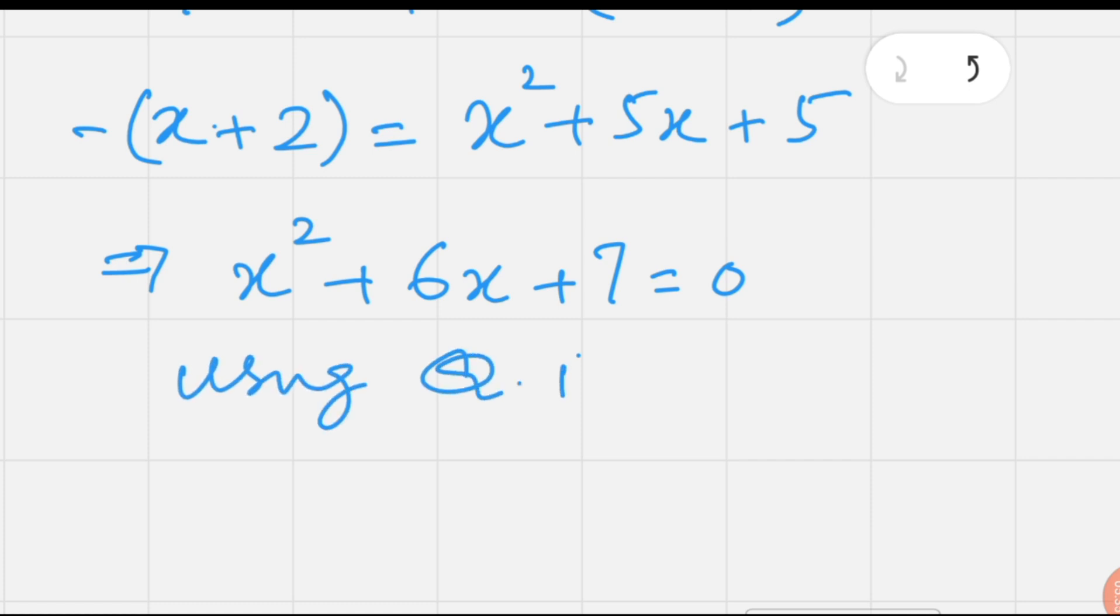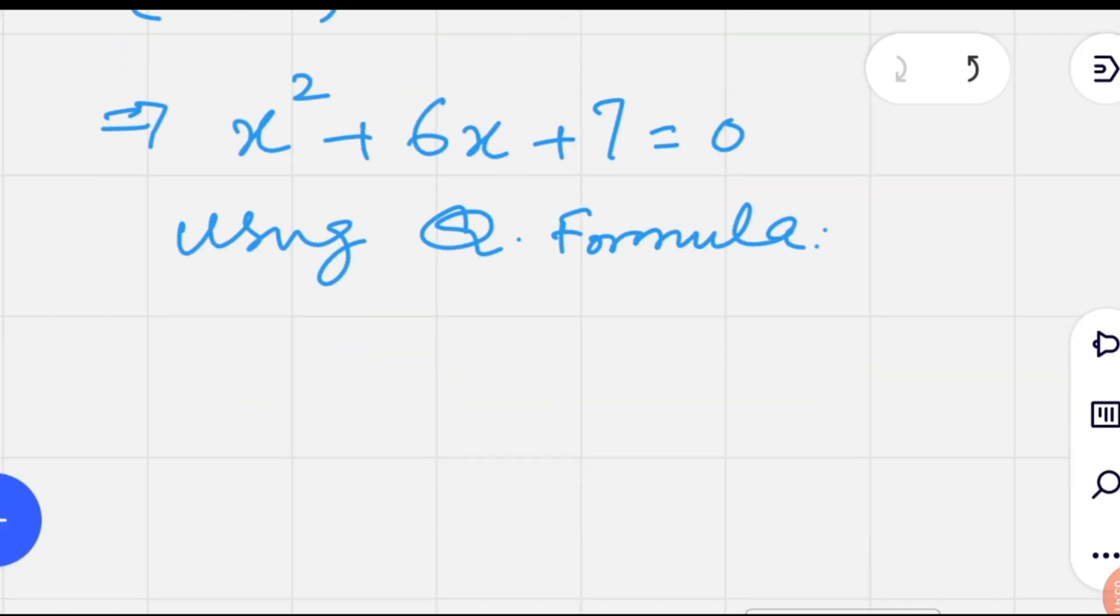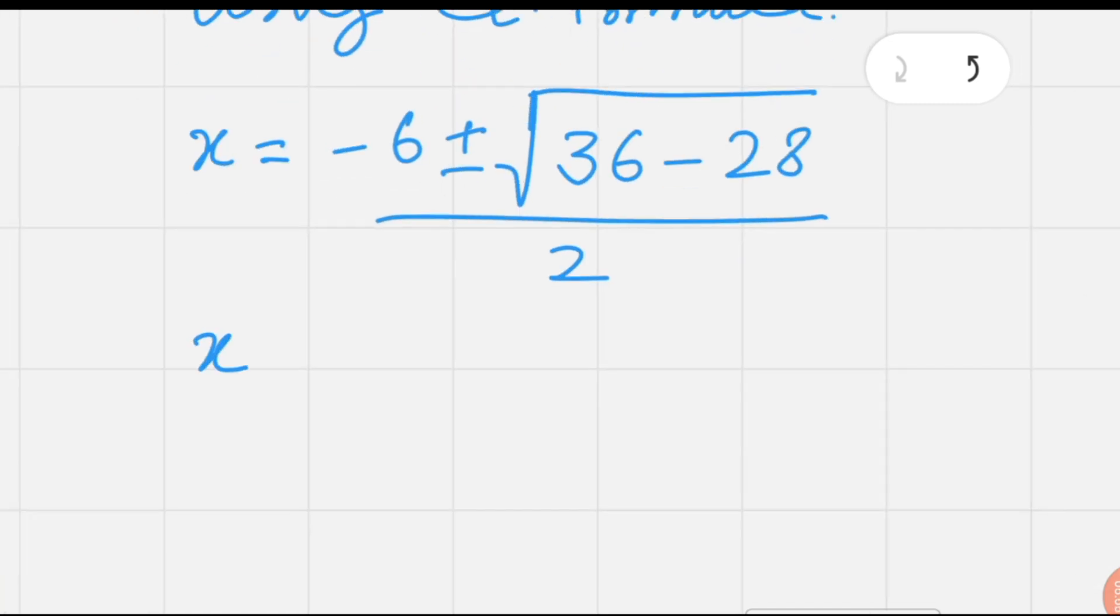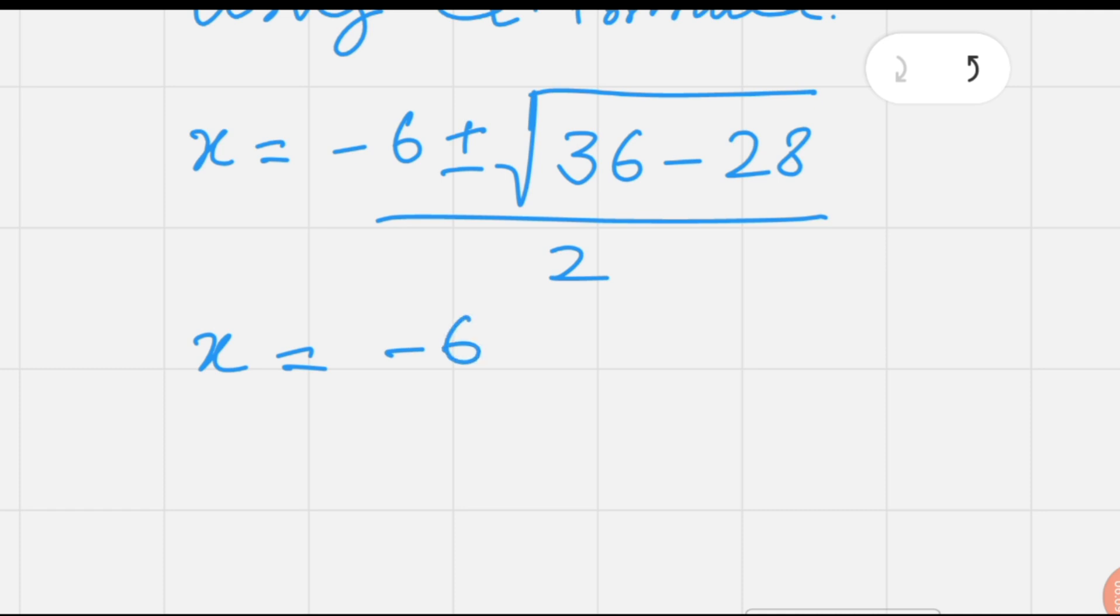In this equation we cannot factorize, so using the quadratic formula directly: x = (-6 ± √(36 - 4×1×7)) / 2, which is (-6 ± √8) / 2.